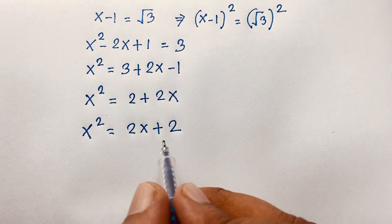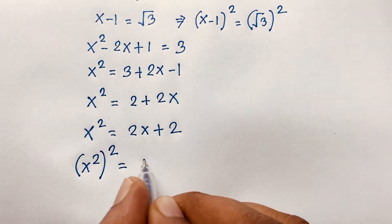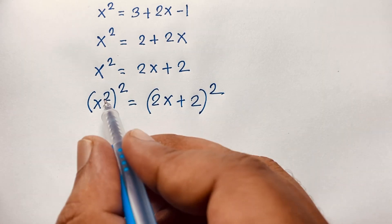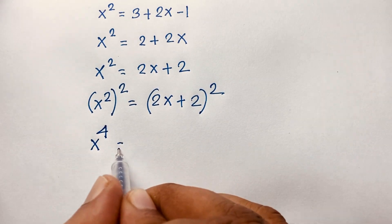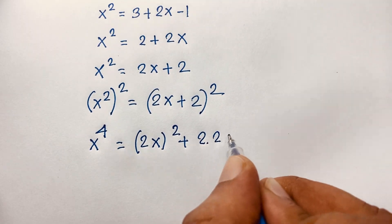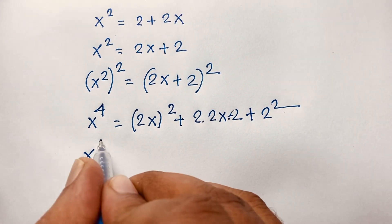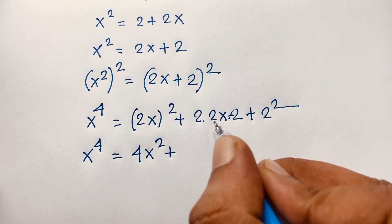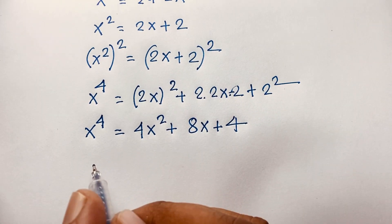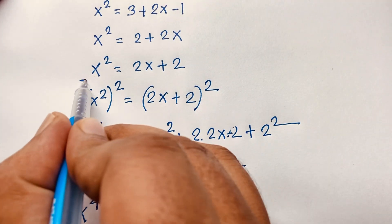Now if I use both sides again whole square, it will be x squared whole to the power 2 and 2x plus 2 whole to the power 2. I use both sides again whole square. 2 times 2 will be 4, so x to the power 4 equals a plus b whole square, which is a squared plus 2ab plus b squared. It will be x to the power 4 equal to 4x squared plus 8x plus 4. Recall x squared equals 2x plus 2, so I put this value in.